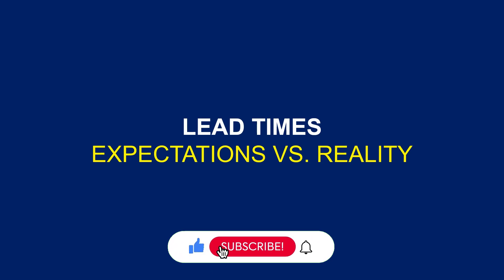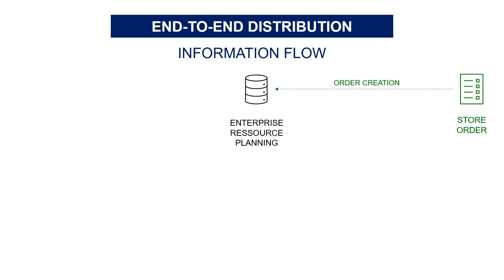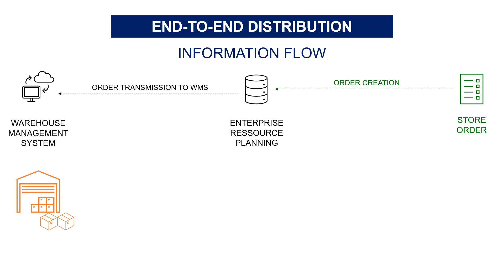This is what we need to figure out: understand the difference between expectation and reality. The supply chain can be defined as several parties exchanging flows of material and information through different systems. To follow shipments, we can connect to these different systems to extract timestamps and follow the performance of each leg of your distribution network.